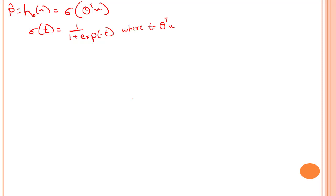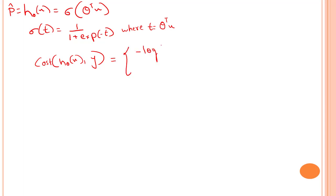Now let's look into the cost function that we have. The cost function for our logistic regression is somewhat like this — we have a log function. Let's write cost as a function of (h(θ, x), y). The cost function is equal to minus log of our hypothesis.